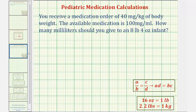You'll receive a medication order of 40 milligrams per kilogram of body weight. The available medication is 100 milligrams per milliliter. How many milliliters should you give an eight pound, four ounce infant?